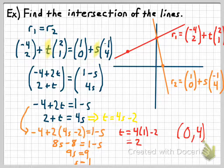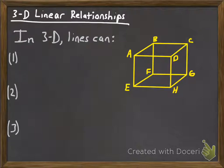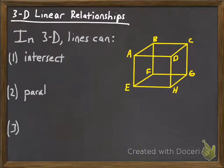Using the vector equation works basically the same way as using slope-intercept form. That was for two dimensions. We also need to be able to do this in three dimensions, so let's take a look at that. One of the things we need to talk about is that there are actually three options for what two lines can do in three dimensions — they're not just intersecting or parallel like they are in two dimensions.